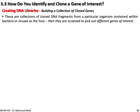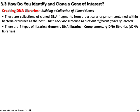How do you identify the cloned gene of interest? You need to create a DNA library — a collection of cloned DNA fragments from a particular organism contained within a bacteria or virus as a host. These are then screened to pick out different genes of interest. There are two types of libraries: genomic DNA libraries and complementary DNA (cDNA) libraries.